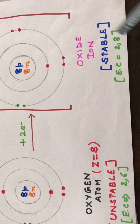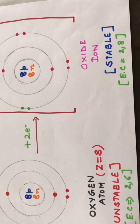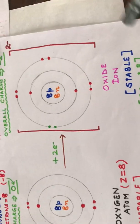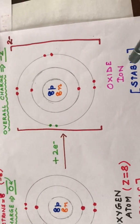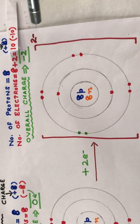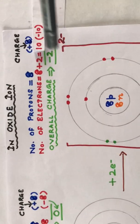Thus it becomes a stable oxide ion. What has happened because of which we call it an ion? It has gained electrons, but we also need to ensure that there is an ion formation by showing the charge generated on the oxide ion.